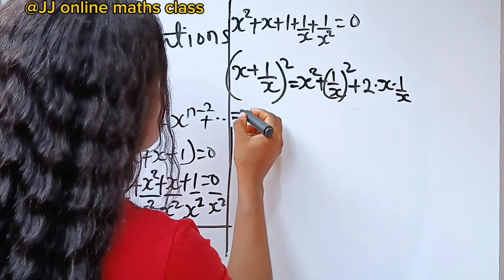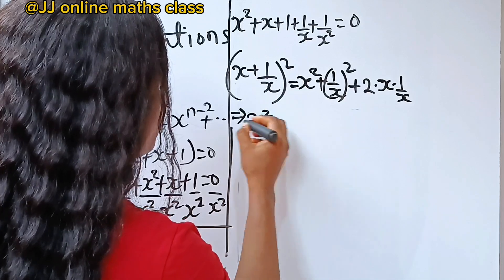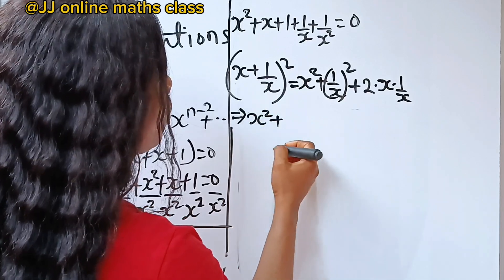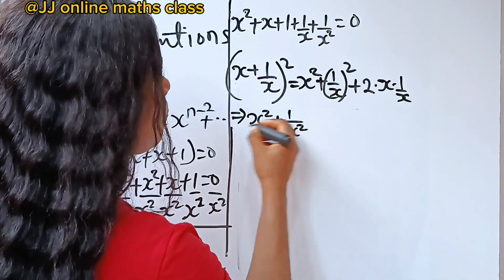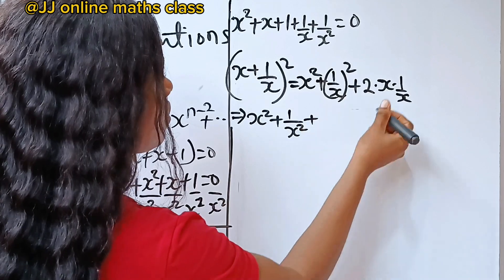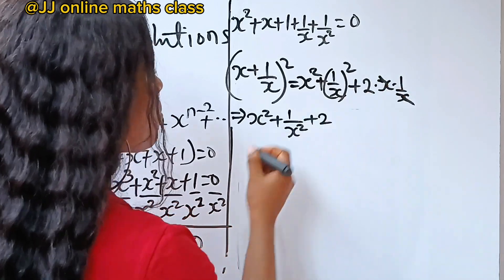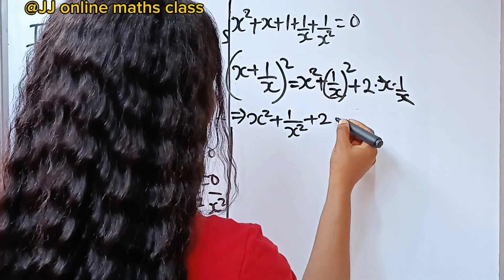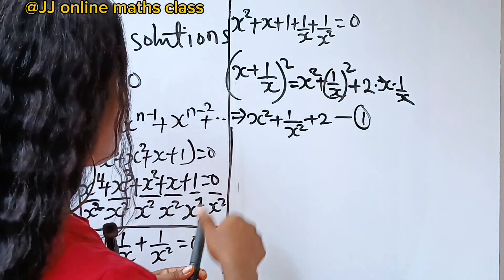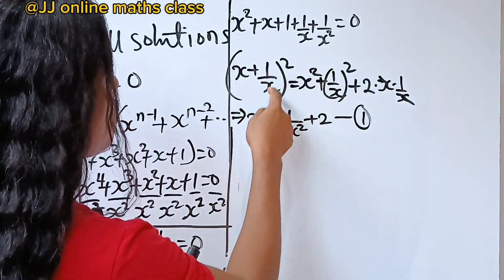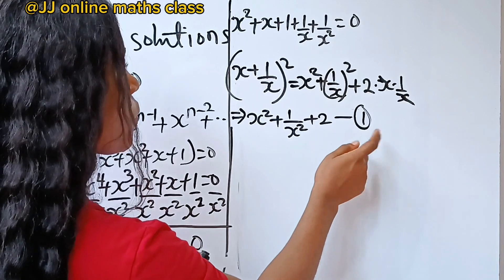So we will have x squared plus 1 over x squared plus 2 — since x times 1 over x gives 1, so 2 remains. Let's call this equation 1: x plus 1 over x, all squared, equals x squared plus 1 over x squared plus 2.